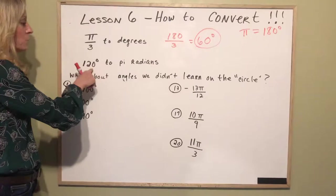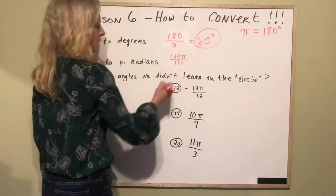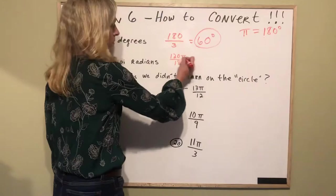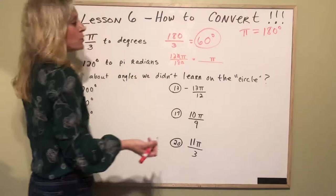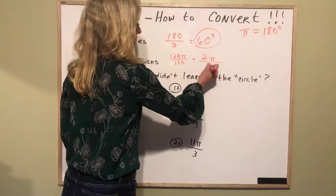And then for 120 degrees to pi radians what you do is you write 120 and then it's times pi over 180. Okay so what you do is you leave pi in the answer and you reduce the numbers that you have. So I like to cross off the zeros. The zeros are gone. I know I'm going to have pi in the answer and it's going to be in the numerator. And then I think what number divides both 12 and 18? Well 6 does. 6 goes into 12 two times and it goes into 18 three times and that's why I know the answer is 2 pi over 3.